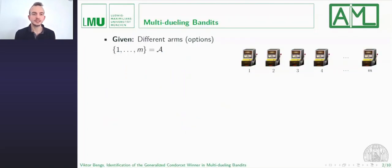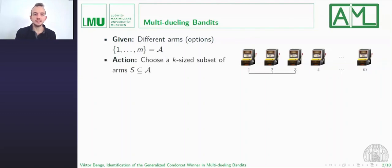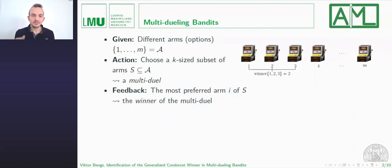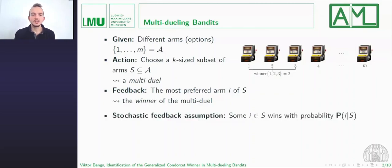So what's the setting we are considering? It's the setting of multi-dueling bandits where we have a finite set of arms, and we interact with these arms by performing actions. The action we allow is to choose a k-sized subset of arms, which we refer to as a multi-duel. The feedback is the most preferred arm among the chosen subset — in other words, the winner of the multi-duel. We assume feedback is generated stochastically, where one arm among subset S wins with probability PI given S, so this probability depends on the chosen subset.